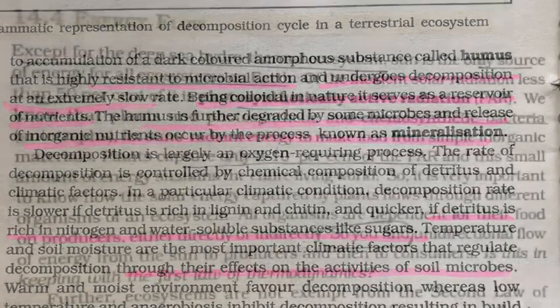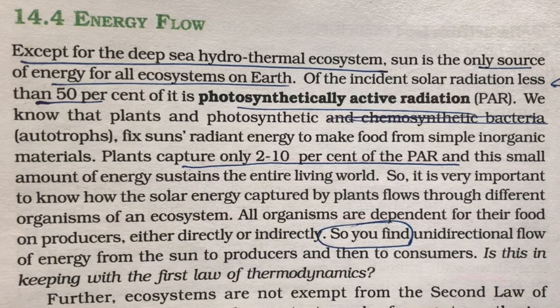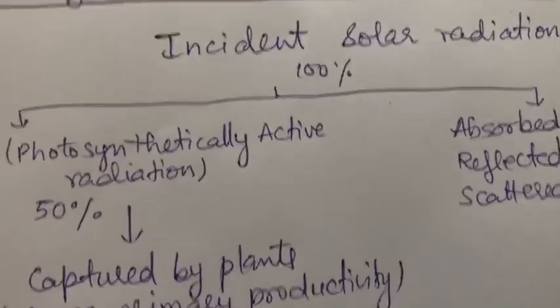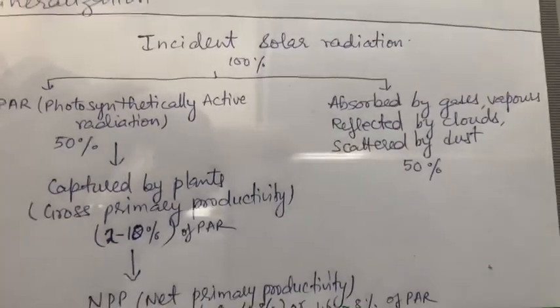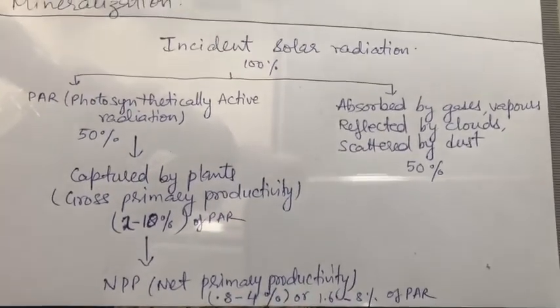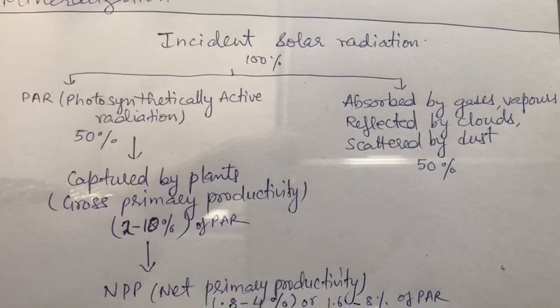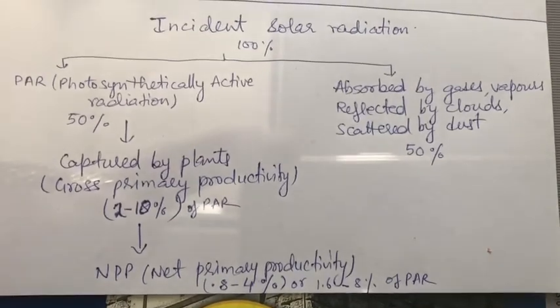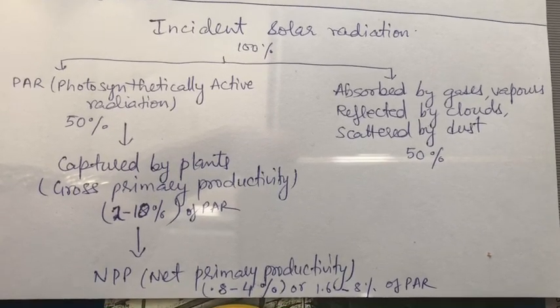The next function of ecosystem is energy flow. Except for deep-sea hydrothermal ecosystems, the sun is the only source of energy for all ecosystems on Earth. Of the total incident solar radiation, less than 50 percent is photosynthetically active radiation (PAR). Of this PAR, only 2 to 10 percent is captured by plants as gross primary productivity, and only 1.6 to 8 percent of PAR becomes net primary productivity.